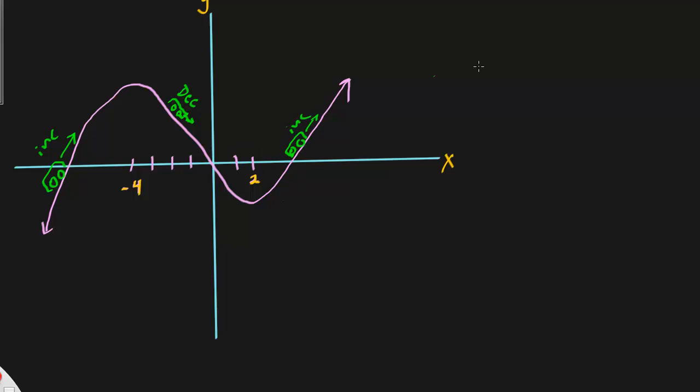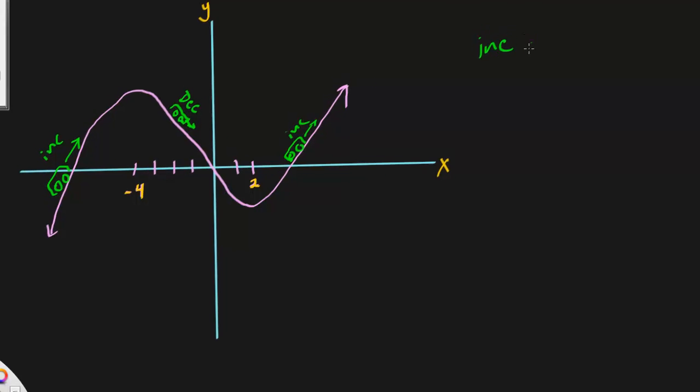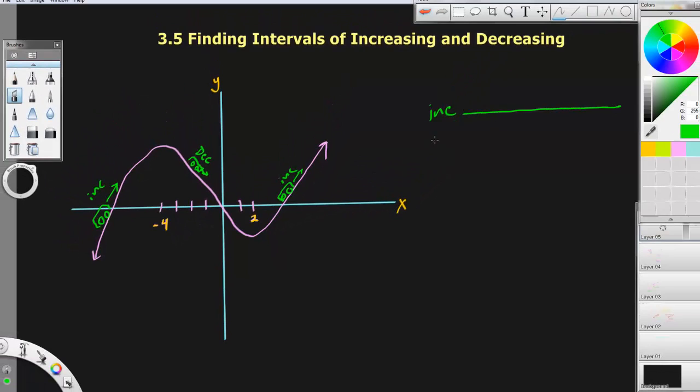So, the intervals, if I said the intervals of increasing on that blank and the intervals of decreasing on this blank, what you're keyed in on are these X values, this negative 4 and this 2 here.